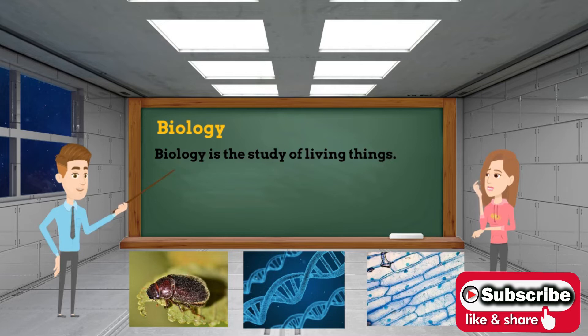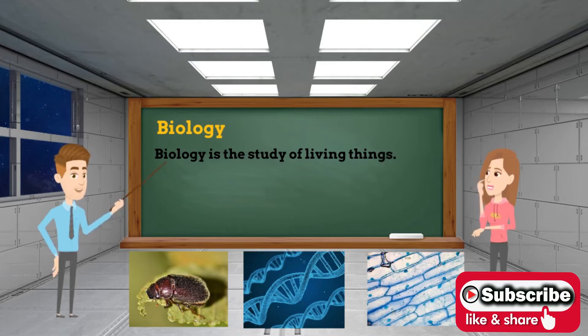3. How the features of living things are related to the functions that their body systems perform. 4. How living things are interdependent and interact with each other in their environment. 5. The life cycles, adaptations and behaviors of living things, and how these features aid survival.